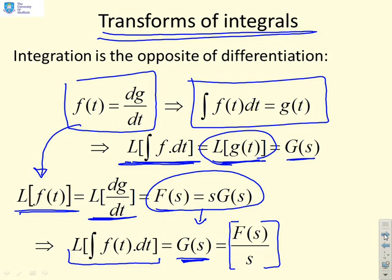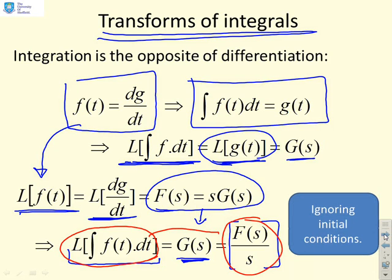And so what you will see, if that's gone a bit quick for you, is Laplace of the integral of f(t) is given by F(s) over s, and that's ignoring initial conditions. So if you integrate something, you can find the Laplace of the integral simply by dividing by s.